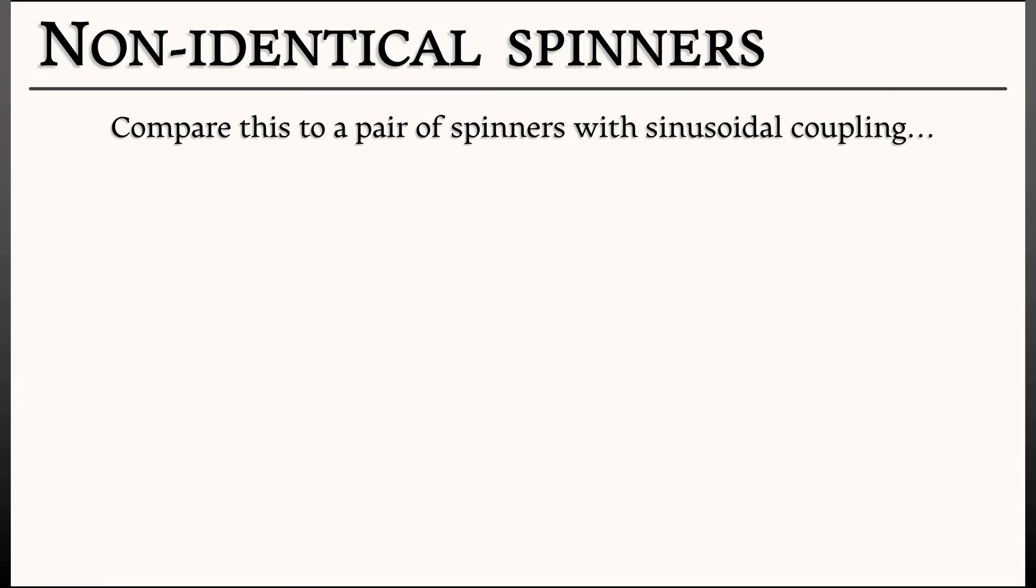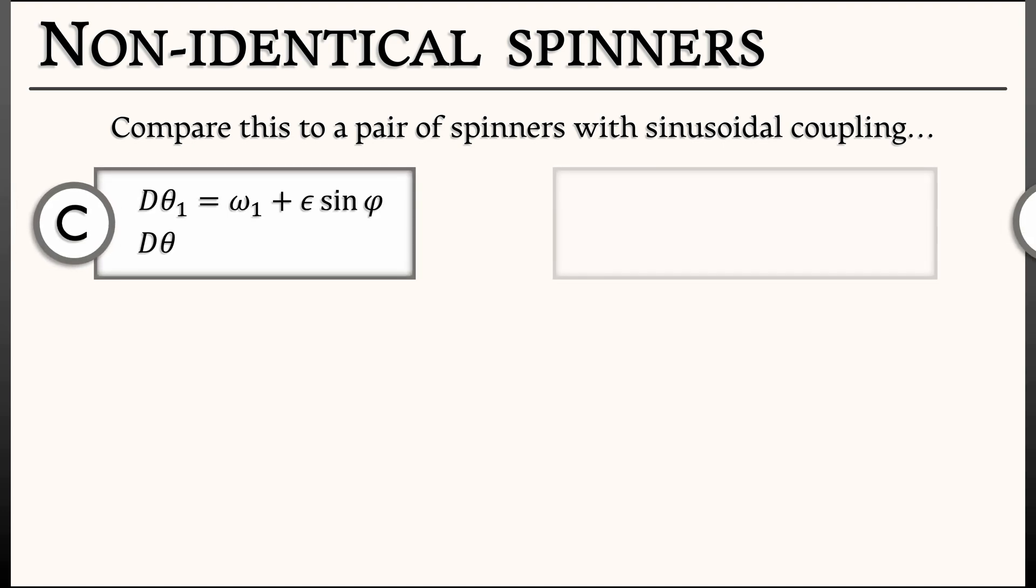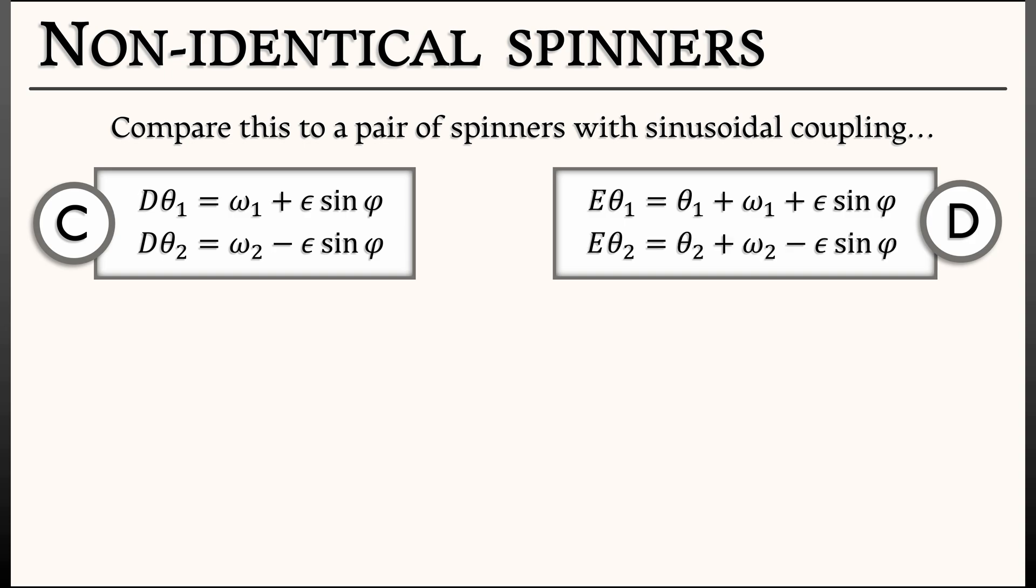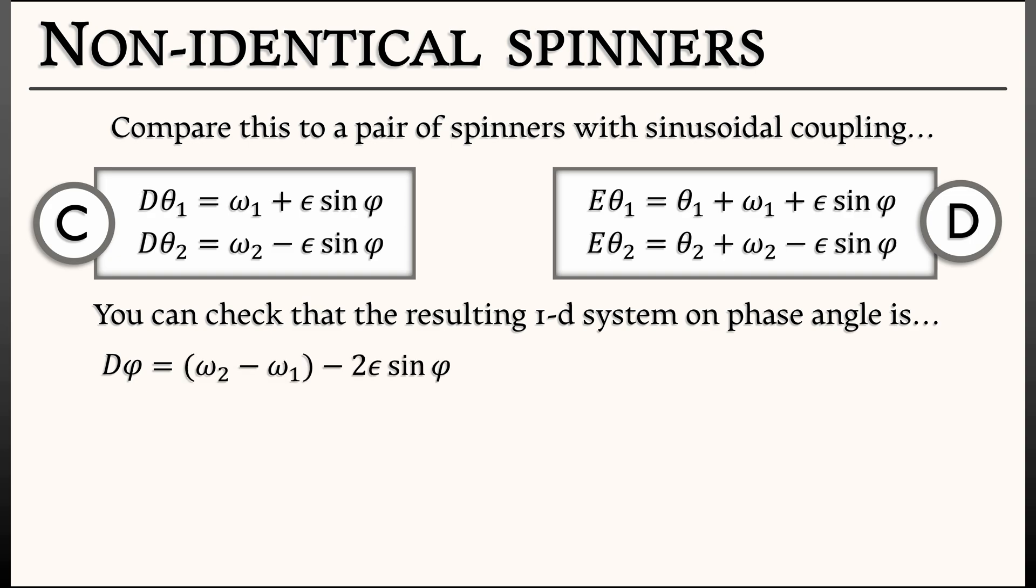Let's repeat that same analysis for a spinner system, where now we have θ₁, θ₂. They're both evolving, but they each have their own natural angular speeds ω₁ and ω₂. We're going to use a simple coupling function, in this case sine of φ. The resulting 1D system on the phase angle φ is the same as before, but with the coupling function replaced by sine of φ: d φ = (ω₂ - ω₁) - 2ε sin φ and E φ = φ + (ω₂ - ω₁) - 2ε sin φ.